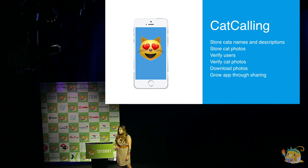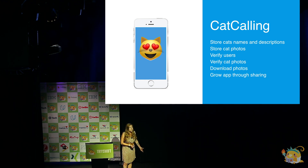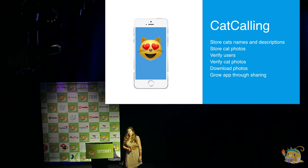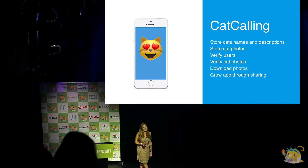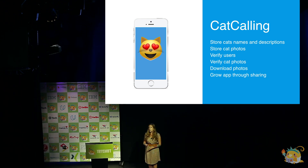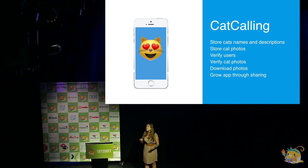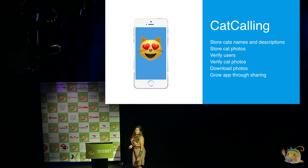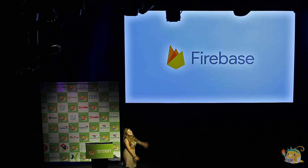I need to be able to verify who users are and keep track of what it is that they're doing. Also, verify that they're just photos of cats — I don't want photos of like bread or goats or things like that. This is just for the love of cats. And I need a way to really download photos seamlessly. When I first made Catcalling, it was an embarrassing amount of time before the photos loaded. So I want to talk about some of the things I did to make that work a little better, and I did that using Firebase.